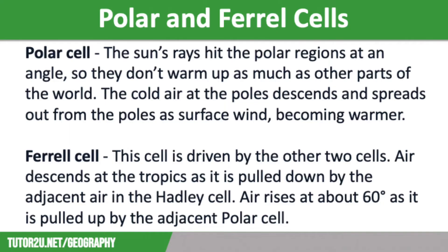The Ferrel cell is found in the middle and is driven by the other two cells. Air descends at the tropics as it is pulled down by the adjacent air in the Hadley cell. Air rises at about 60 degrees as it is pulled up by the adjacent polar cell. Air converges at low altitudes to ascend along the boundaries between the cool polar air and the warm subtropical air, generally occurring between 60 and 70 degrees north and south of the equator. This often occurs around the latitude of the UK, which gives us our unsettled weather. The circulation within the Ferrel cell is completed by a return flow of air at high altitudes towards the tropics, where it joins sinking air from the Hadley cell.